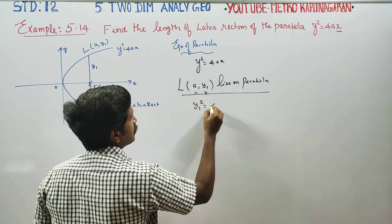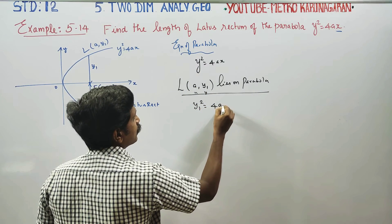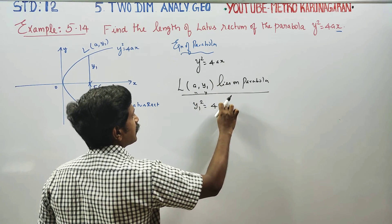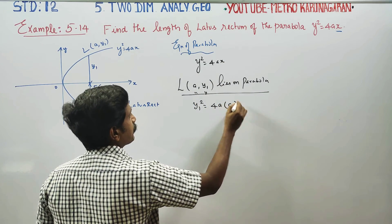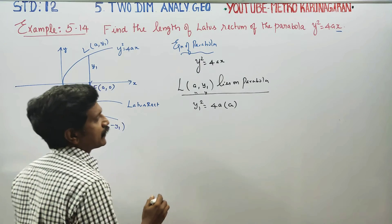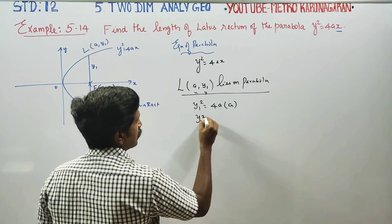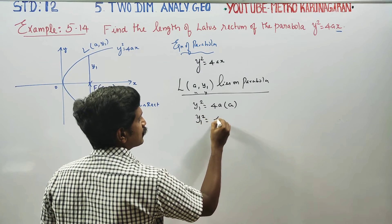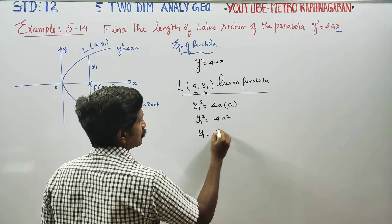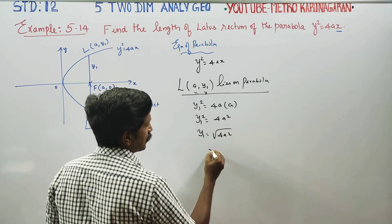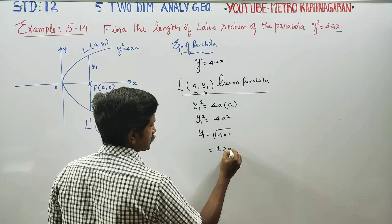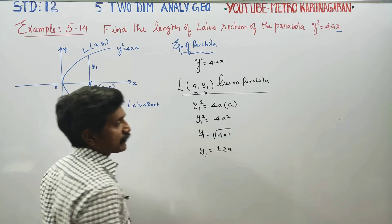At point L(a, y1), substituting x = a into y² = 4ax gives y1² = 4a². Therefore y1 = ±2a.